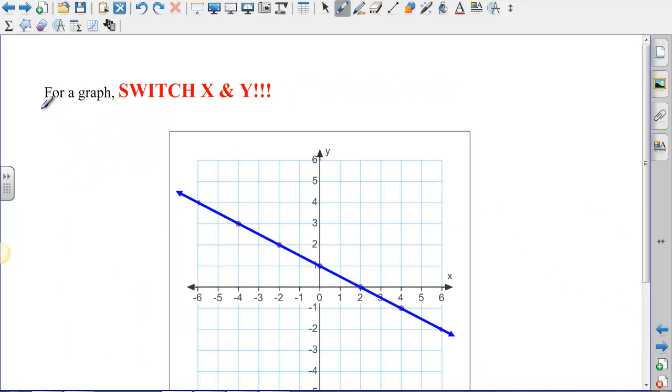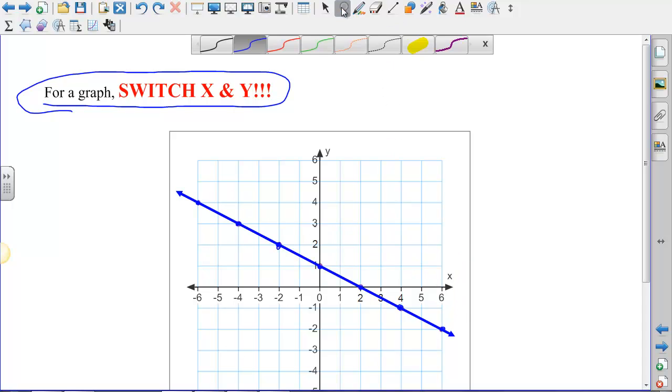Same thing happens for a graph. For a graph, our phrase of the day is to switch x and y. So I have some points here, like (-6, 4), and (-4, 3), and (-2, 2), (0, 1), (2, 0), (4, -1), (6, -2). Those are all points on that line, which is that graph. And to find the inverse, I'm just going to take the coordinates and switch x and y.